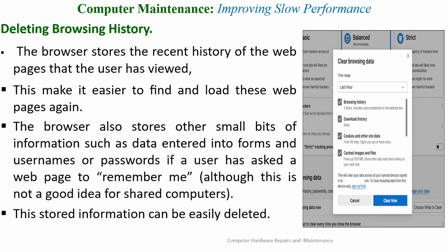Deleting browser history is one of the tips that will help you improve the slow performance of your computer. The browser stores the recent history of web pages that the user has visited, making it easier to find and load those pages again. The browser also stores other small bits of information such as data entered into forms, usernames, and passwords. This information can be easily deleted — here is a browser history where you can clear and delete all the browser history inside your PC.